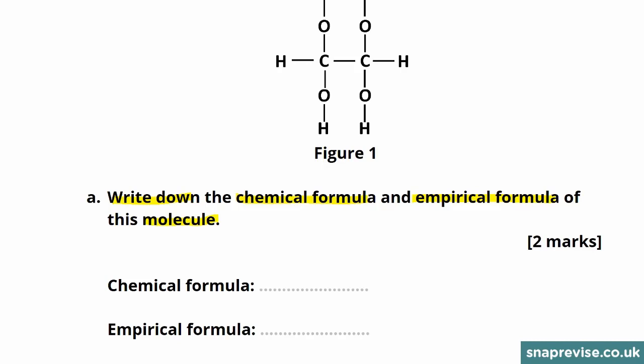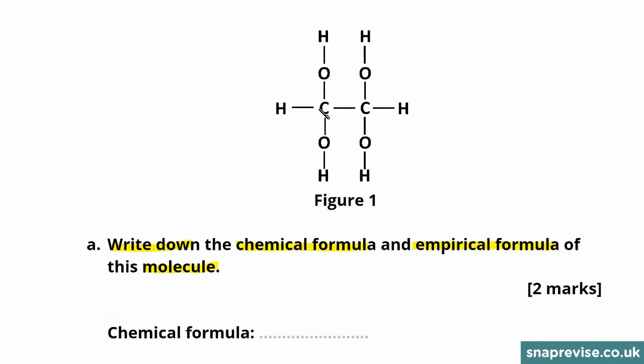To start with, it's easy to identify the chemical formula for this molecule, as you just need to count the number of atoms of each element that appear. For example, if you start with carbons, you can see that we have two carbon atoms. So we write this with a capital C with a subscript 2.